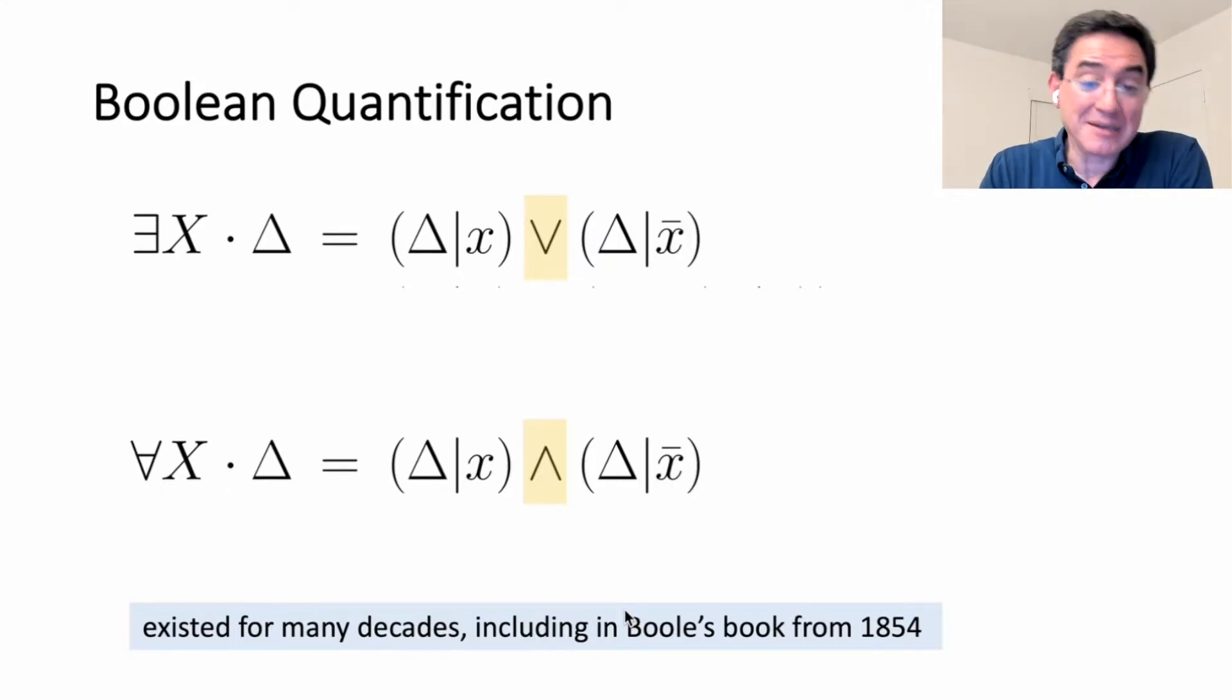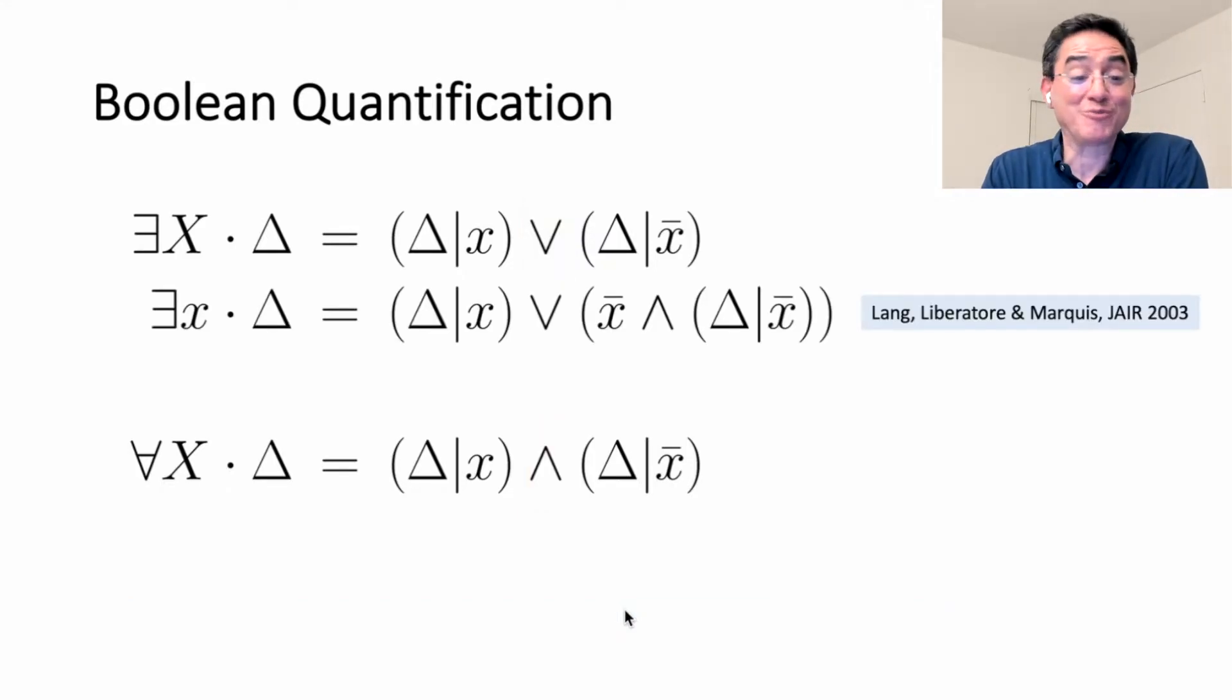Relatively recently, compared to the history of quantification, a proposal was made to use a more refined notion of existential quantification, where we quantify a state of variable or a literal from a formula. That's the definition. This is more general because we can use it to define variable quantification. We just have to quantify both states of the variable. The order does not matter. Quantification is commutative.